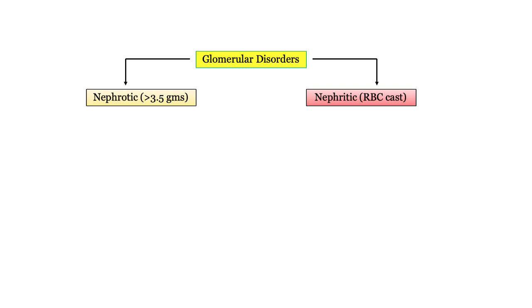We have the nephrotic syndromes, characterized by massive proteinuria, and the nephritic syndromes, characterized by glomerular bleeding. For completeness, we also have the overlap syndromes, which may be manifest by either nephritic or nephrotic components.